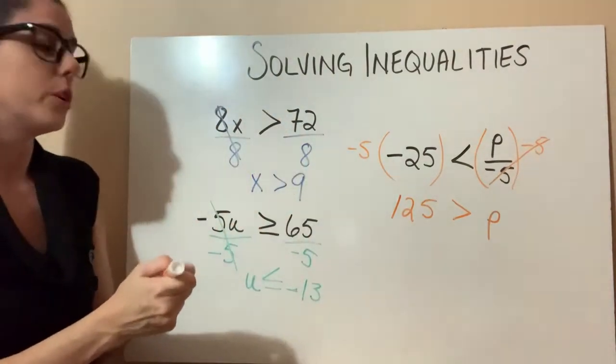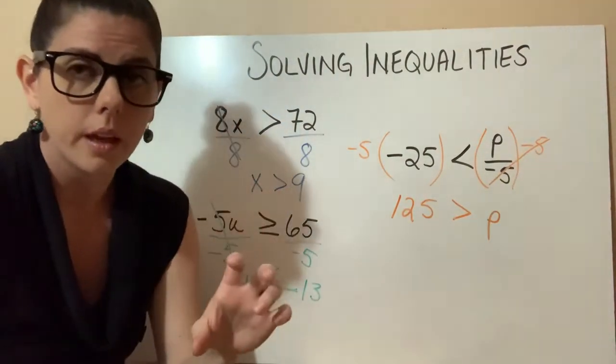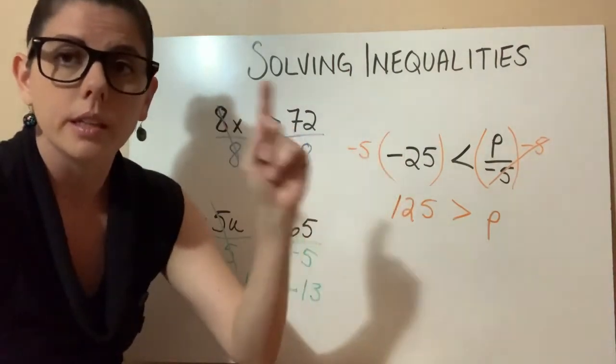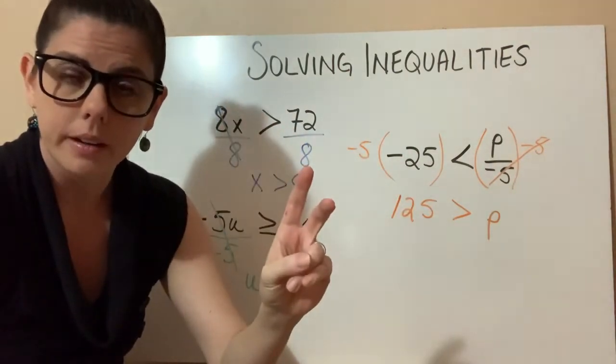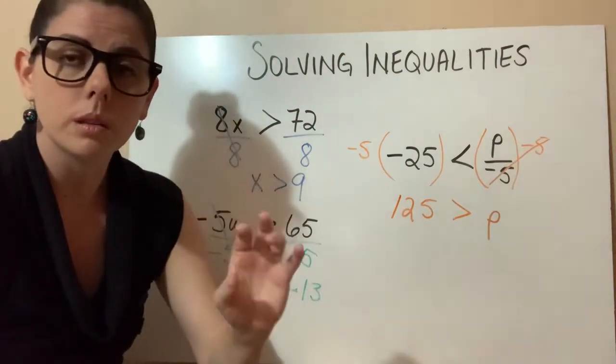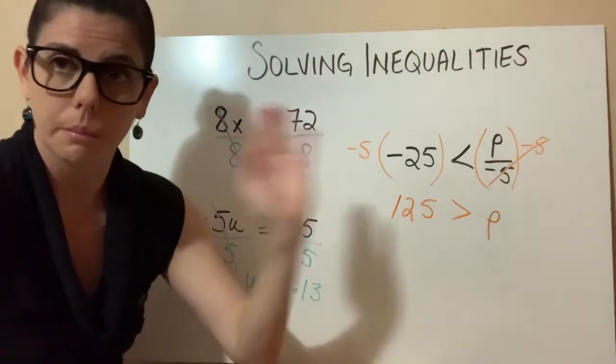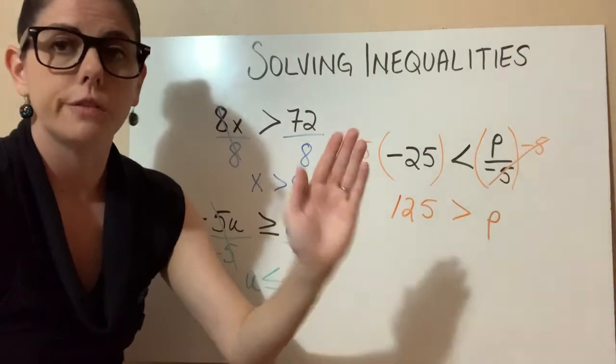Keep that in mind when you're using your properties of equality. It's all the same until you multiply or divide by a negative number. Whenever you multiply or divide by a negative number on both sides, that means you flip the sign.